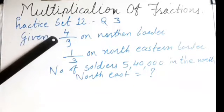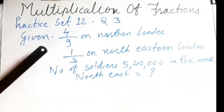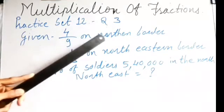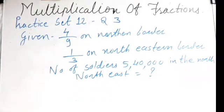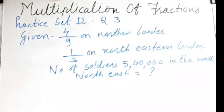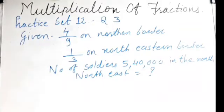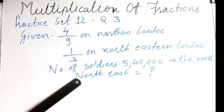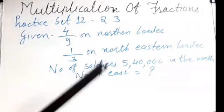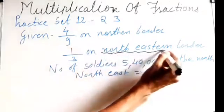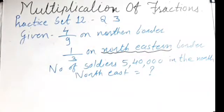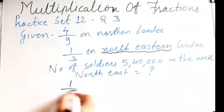In this example, the total soldiers in the army are given; out of that, four upon nine were on the northern border. One-third were on the north-eastern border, and the number of soldiers on the northern border is five lakh forty thousand. They only ask for the north-east, so we use the fraction one-third.